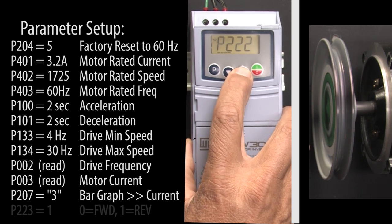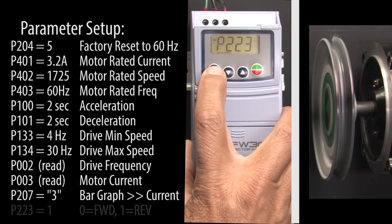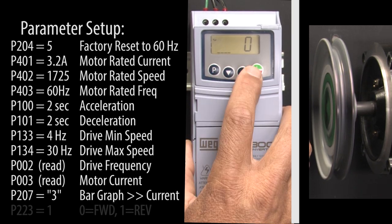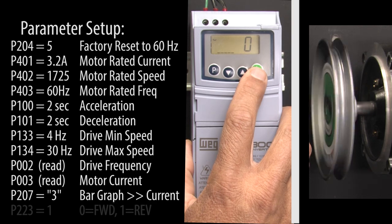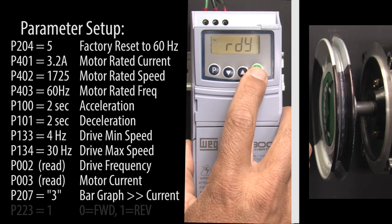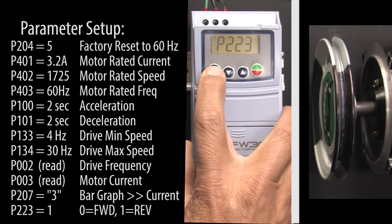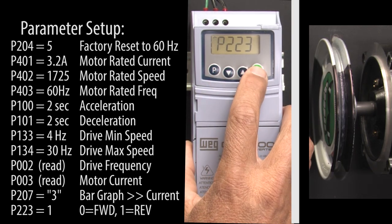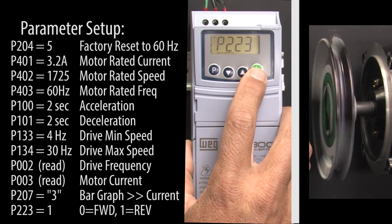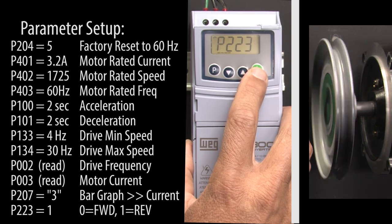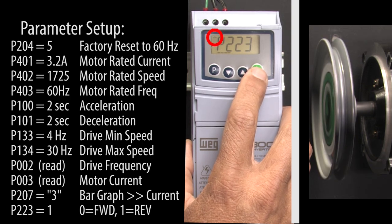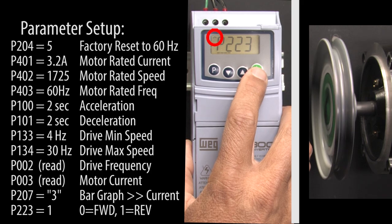Parameter 223 controls forward and reverse. Stop the motor, change it to a 1, hit P to accept that, and now when we run the motor it rotates in the opposite direction and the rotation indicator up here also changes direction.